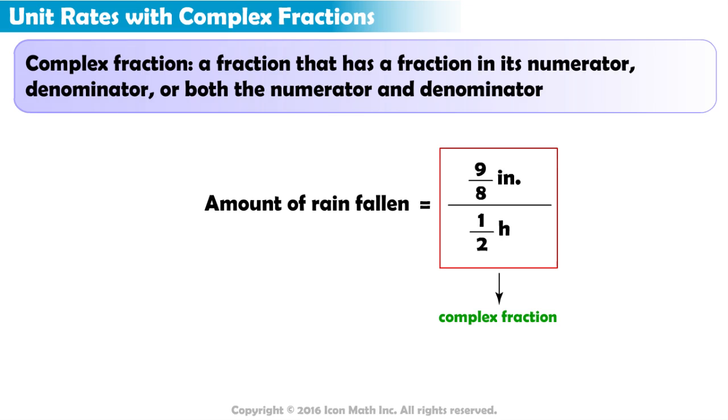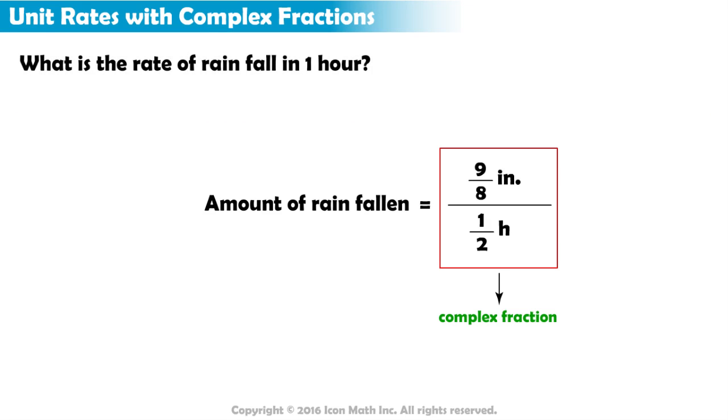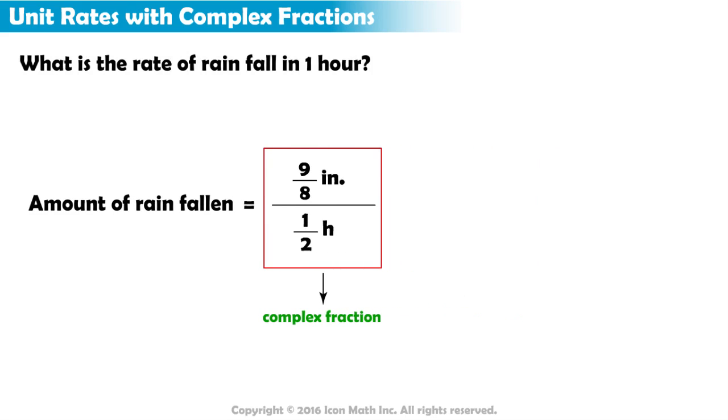Curious again, Cassandra wants to know what the rate of rainfall will be in one hour if it continues raining this way. To calculate this, we must find an equivalent fraction where the denominator represents one hour.